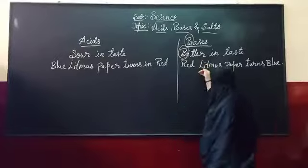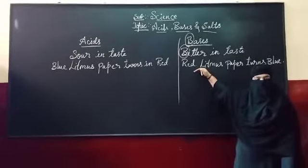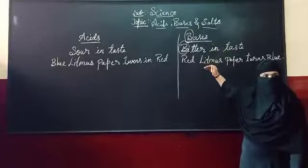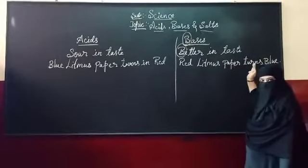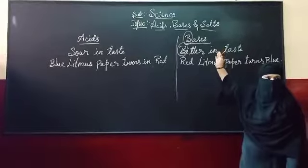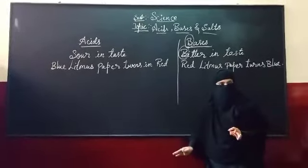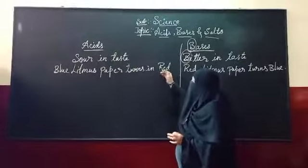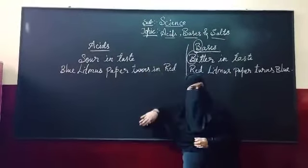Now, coming to this side, the red litmus paper, when we are dipping in the bases, it turns into blue. If not, if it is not a base, then there will be no change in the litmus paper. Clear? Then, this is the one step. Then, the next step.